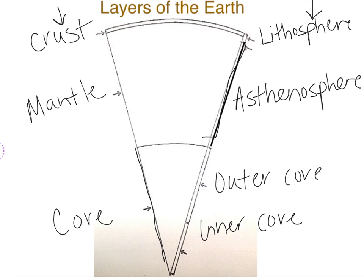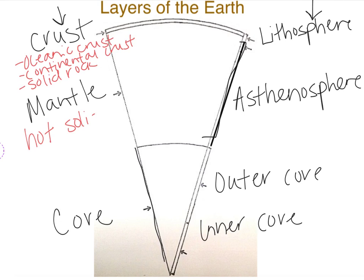Okay, so the crust is made of oceanic crust and continental crust. It's solid rock. Those are the three things that I want you to know about the crust. Next, the mantle. This one just generally is hot, solid rock. It's solid rock.